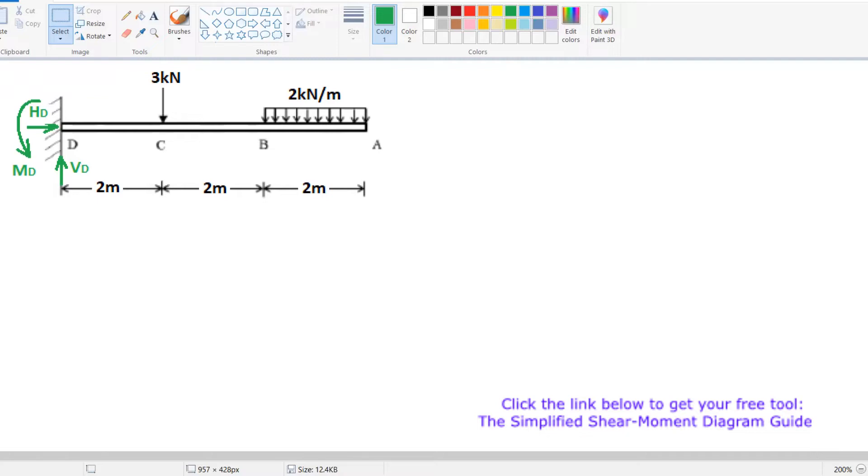First, we will calculate for reactions. Right away we can see our horizontal reaction HD is going to be equal to zero because we don't have any horizontal forces. Sum of forces in the X direction equals zero, which results in HD equals zero.